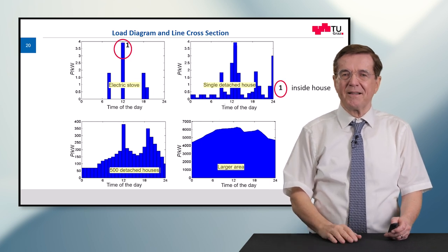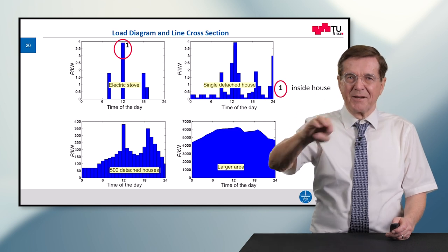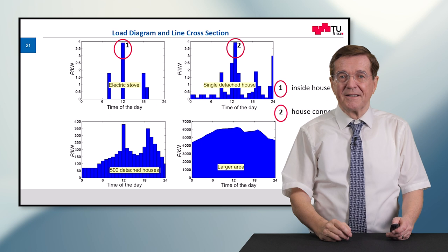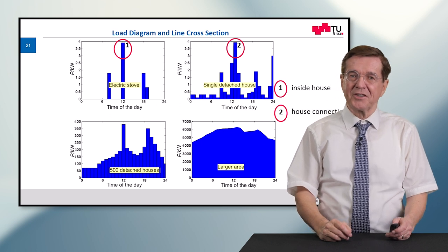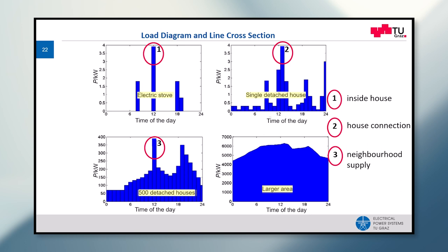Applying these two rules to our examples: the lunch peak is responsible for the thickness of the cables in the walls — the whole household connection. For the small settlement, one line goes into it — this is the neighborhood supply. And for a whole city, we have the district and city supply, which again is controlled by the peak load. It's the peak power, not the energy, that is decisive.